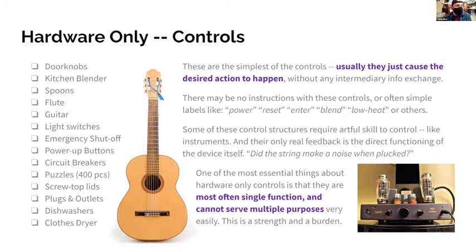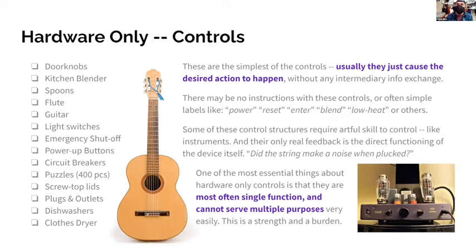A hardware control is usually pretty simple and straightforward. It can be the simplest thing to implement - if you're building a guitar, you don't need any extra effort to make an interface to control the strings, as opposed to a piano where someone really did have to think it through: how do I get a light key press to turn into a mallet hitting a string? Hardware-only controls can span quite a bit and may be in service of something digital - a button or switch - but there's no on-screen component.